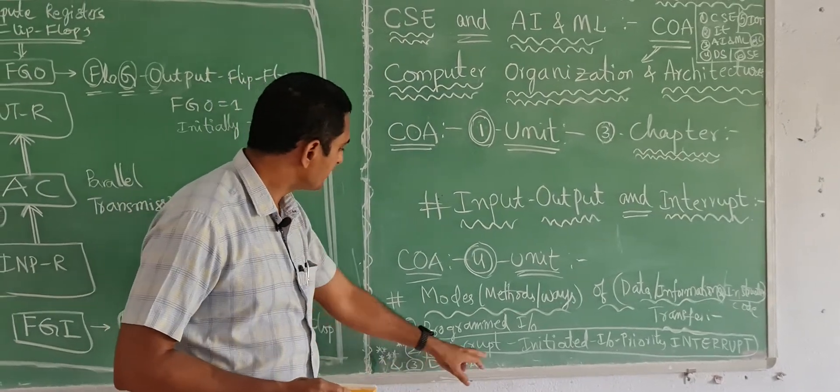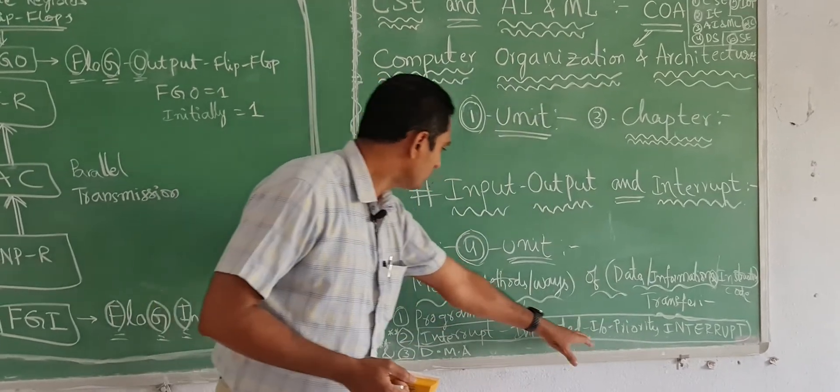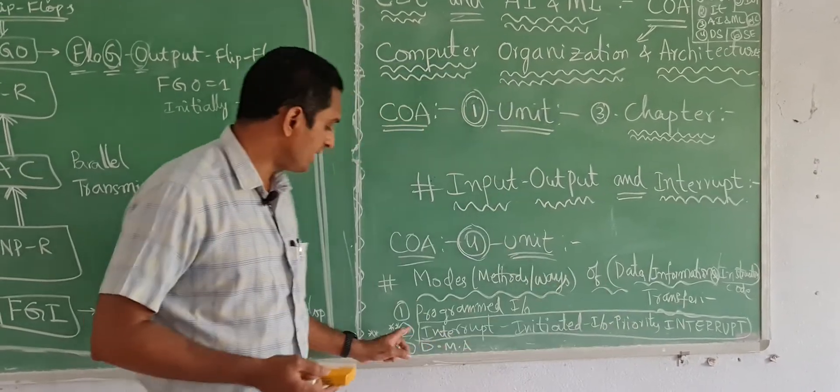Second one is interrupt initiative input output, priority interrupt. I made it into box.